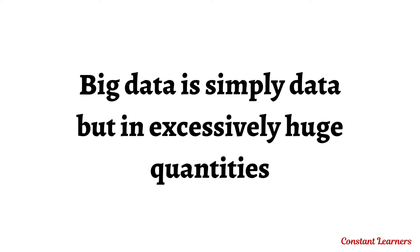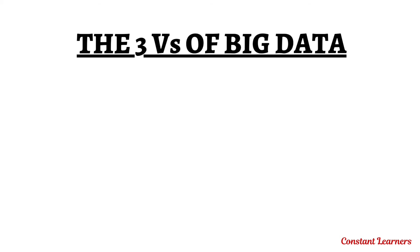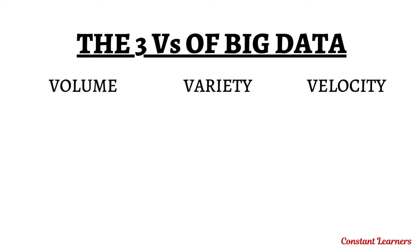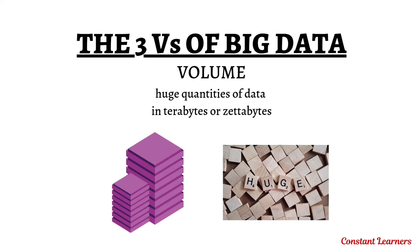Before we get to big data platforms, let's look at the three key concepts or characteristics of big data: volume, variety, and velocity. We know that big data is about huge quantities of data, and volume refers to just that — the amount of data being generated, which is in terabytes and zettabytes these days.